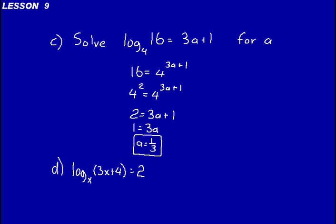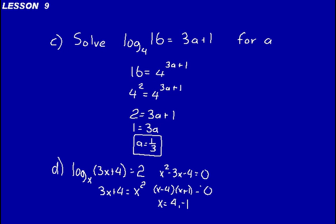Let's do one more — look at practice problem D. If you want, try to solve it on your own first. We want to get this out of logarithm form and into exponential form. We have log base x of the argument 3x plus 4 equals the exponent 2. So the argument 3x plus 4 equals the base x to the power of 2, or x squared. You should recognize this is a quadratic relationship — rewrite it, set it equal to 0: x squared minus 3x minus 4 equals 0. Factor into two binomials: x minus 4 and x plus 1. Those two values give x equals 4 and x equals negative 1.